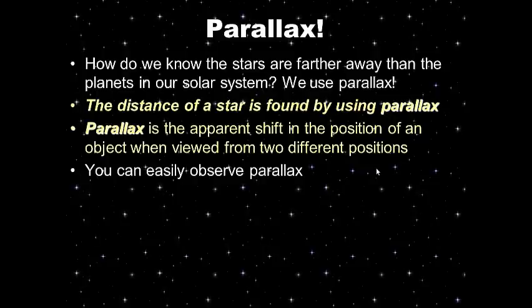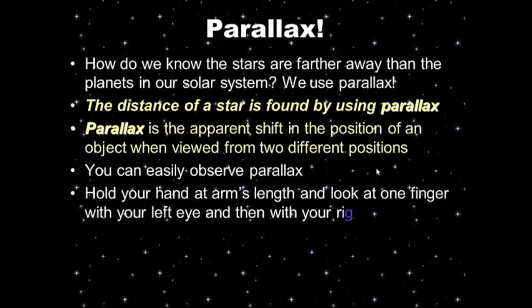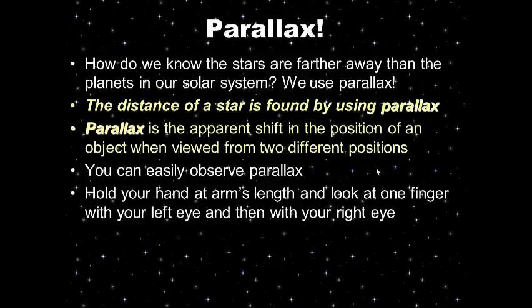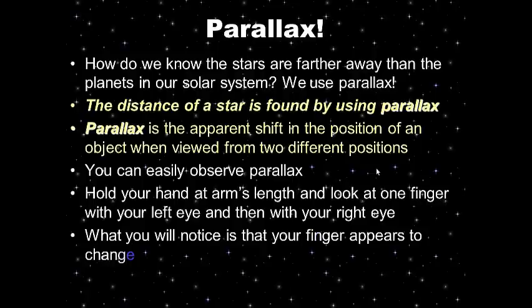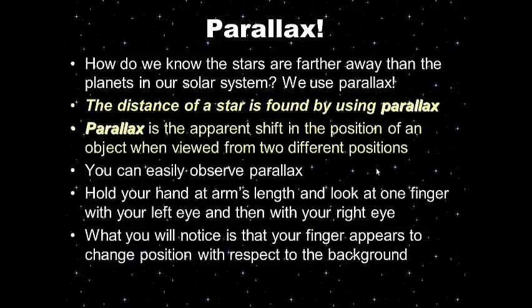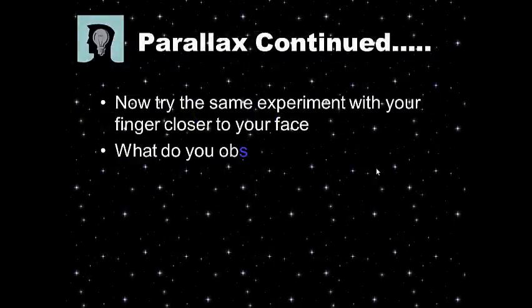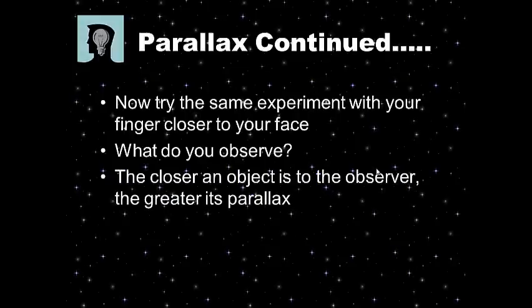You can easily observe parallax yourself. Hold your hand at arm's length straight out and look at your finger with your left eye, then with your right eye — close one at a time. You might notice your finger shifts. What you'll notice is that your finger appears to move slightly with respect to the background. Now try the same experiment with your finger closer to your face. The closer an object is to the observer, the greater its parallax.